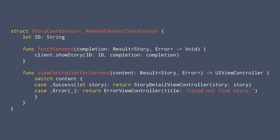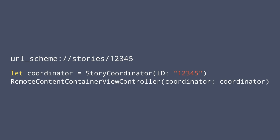Let's see what it would look like for our stories example. We can define a StoryCoordinator that is a RemoteContentCoordinator, initialized using an ID. fetchContent just calls showStory on our API client — it makes a request to the API and gets the response. In viewControllerForContent, in successful cases we can create a story detail view controller because we have the story, and in error cases we can show an error view controller.